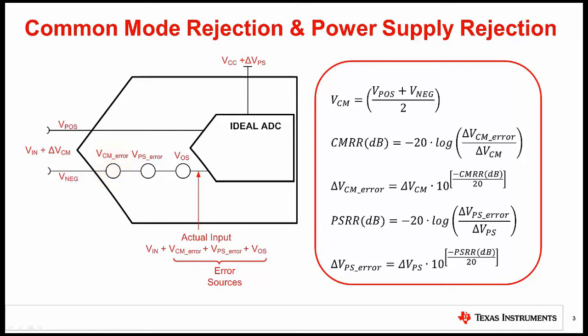The magnitude of this error source can be determined using the common mode rejection ratio, or CMRR, specification. CMRR is usually specified in decibels and can be calculated by taking negative 20 times the log of the change in common mode error divided by the change in common mode voltage. This equation can be rearranged to solve for the change in common mode error based on the change in common mode voltage.